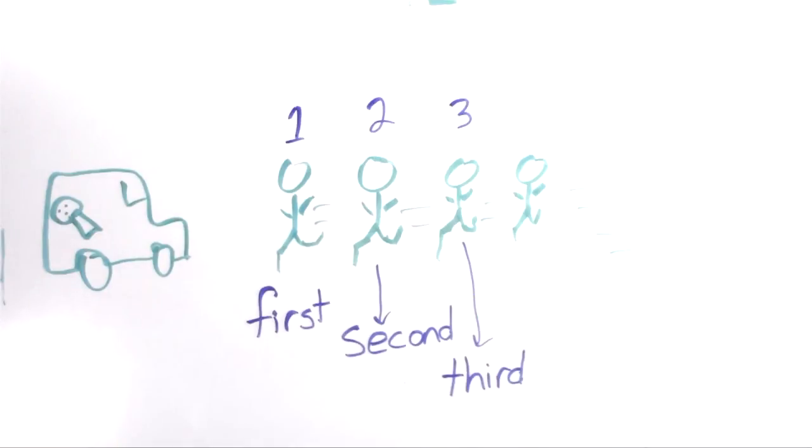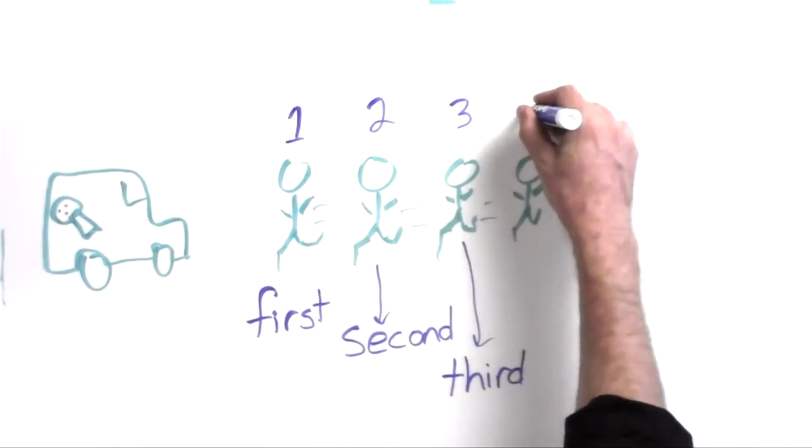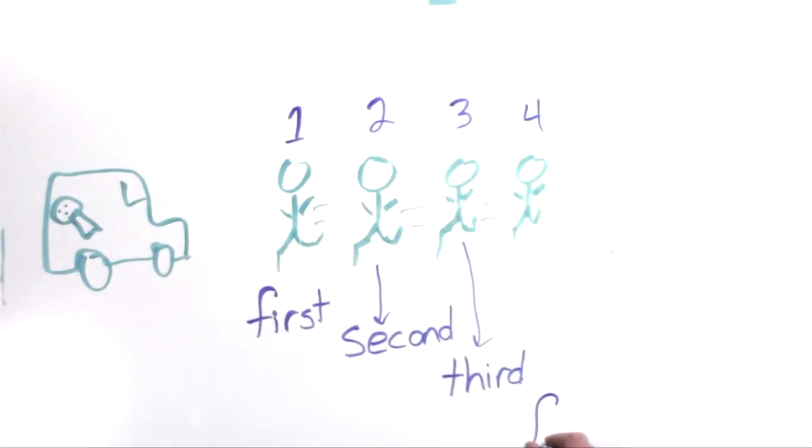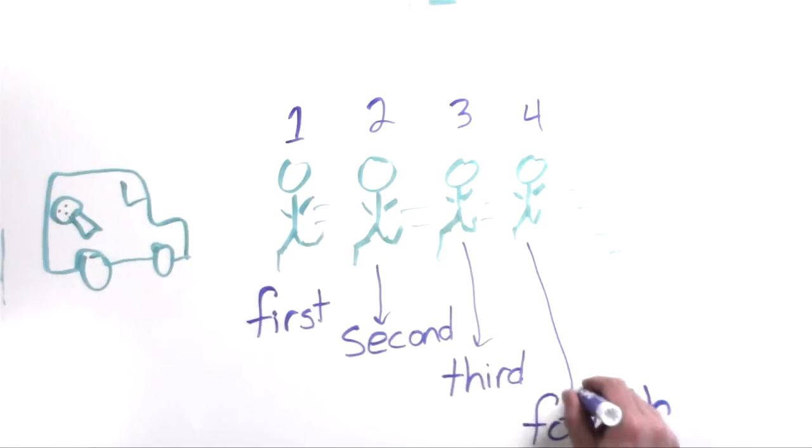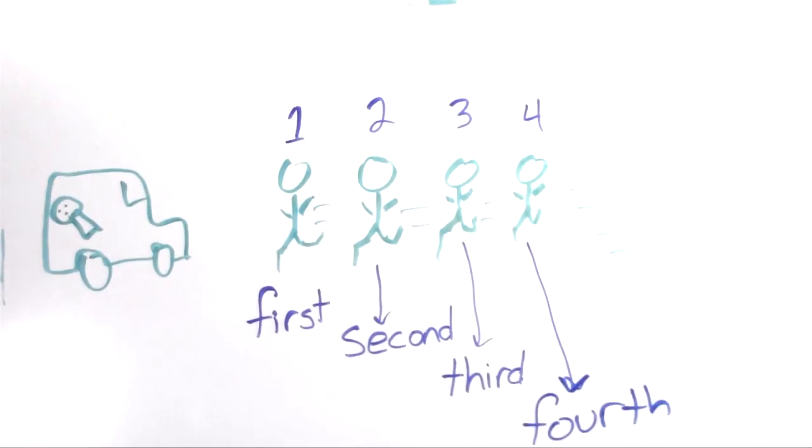And finally, this person right here, the number four person, got there fourth. So we need to know these words because we live in a society that uses words like this. And we don't just say, this is the number one person, and this is the number two person. We say, who got here first? Who got here second? Who is the third person? Who came in fourth place? We say things like that. So we need to know how to order things or put things in order with their proper name.